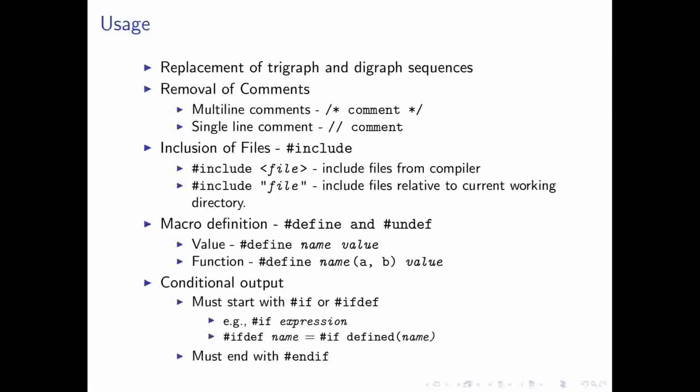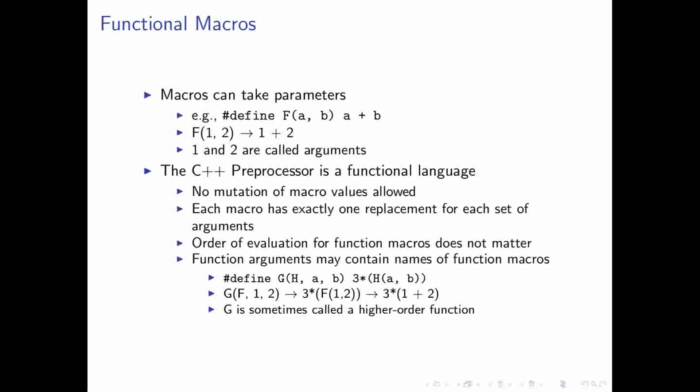And one final important thing that the preprocessor does is conditional output, which means that it'll only output certain segments of your code if a certain condition is met. So, we have two ways of specifying this. We have if or ifdef. And then you put anything that you want to be considered for conditional compilation in between that and an endif directive. And, in particular, ifdef is kind of a form of syntactic sugar. It's basically the same as if defined and then the name of the macro that you want to check for.